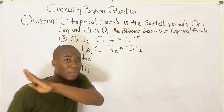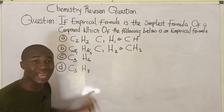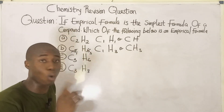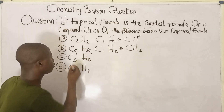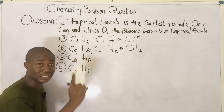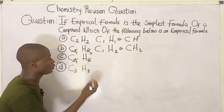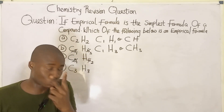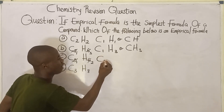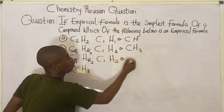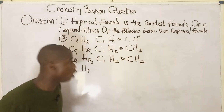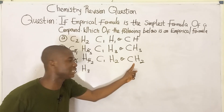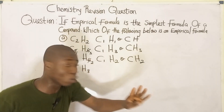For option C, which is C₃H₆ — is this the simplest form it can exist? No. I can divide through by 3: 3 divided by 3 is 1, and 6 divided by 3 is 2. So I get CH₂. Since C₃H₆ can be reduced to CH₂, it is not in its simplest form and therefore cannot be the empirical formula.